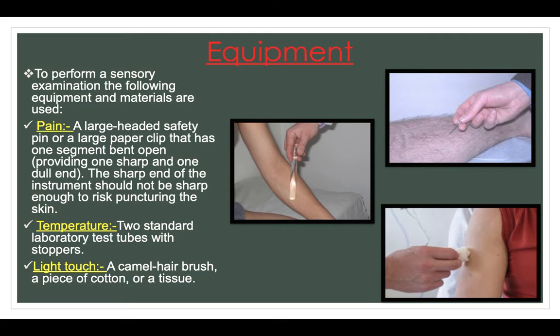Equipment: for pain testing, a large-headed safety pin or large paper clip with one segment bent open — providing one sharp and one dull end — is used. The sharp end should not be sharp enough to risk puncturing the skin. For temperature, two standard laboratory test tubes with stoppers are required. For light touch, a camel hair brush, a piece of cotton or tissue can be used.